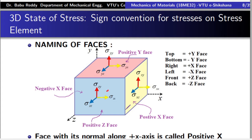Now let us start with the first concept: naming of these faces. There are 6 faces and we have a certain convention — the naming procedure to be followed. As you can see in this diagram, we have the x-axis, y-axis, and z-axis. The faces are: the right face (yellow), the left face on the other side, the front face (blue), the back face behind it, the top face, and the bottom face below it.